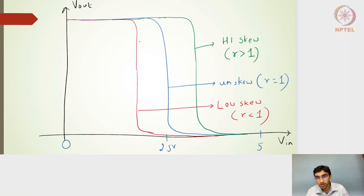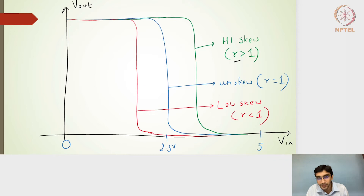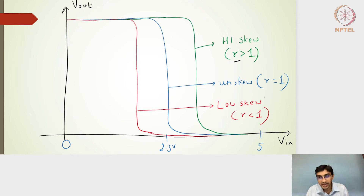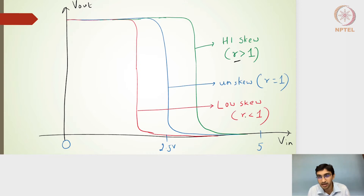This slide talks about the high skew inverter. In the previous example, the skewing ratio was greater than 1. For the unskewed inverter, the skewing ratio equals 1, meaning the beta of the PMOS equals the beta of the NMOS. For the low skew inverter, the NMOS is more dominant — its beta exceeds that of the PMOS — giving a skewing ratio less than 1.